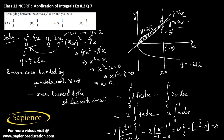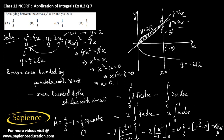Therefore the required area equals 2 × (2/3) × 1 minus 2 × (1/2) × 1, which gives 4/3 minus 1 equals 1/3. The answer is 1/3 square units. So the answer is option B.